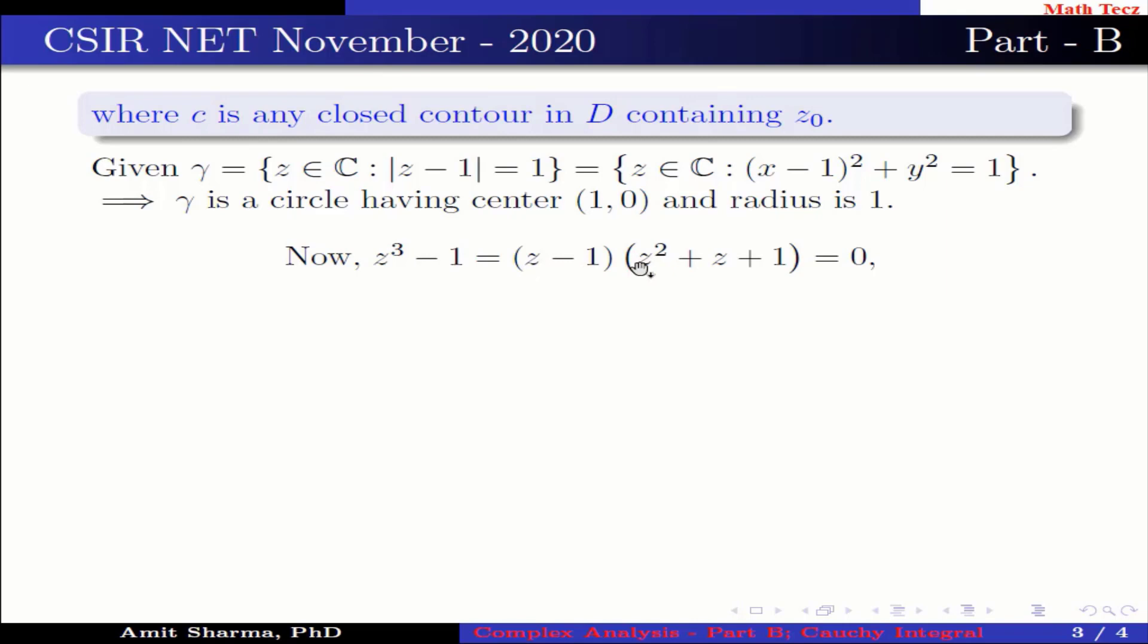Now z cube minus 1 can be written as (z minus 1) into (z square plus z plus 1) which equals 0. This implies z equal to 1, and z equal to minus 1 plus minus root 3 i by 2. But only z equal to 1 lies inside the circle gamma.